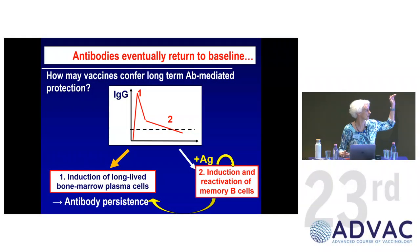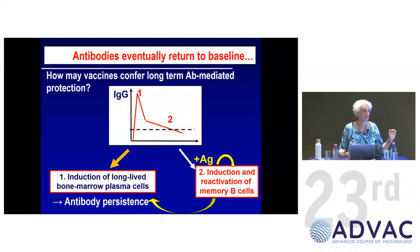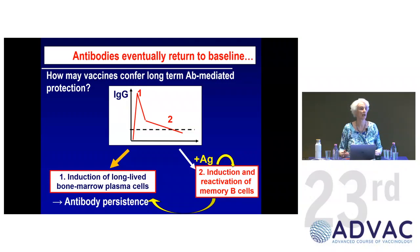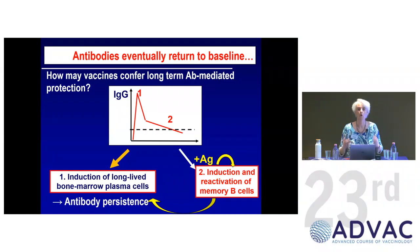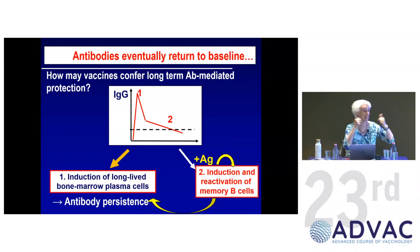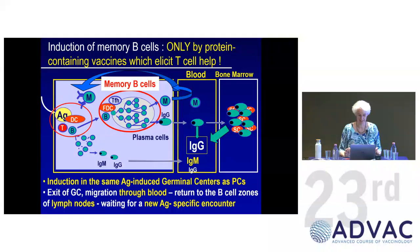At some point antibodies are going to go down below the baseline needed for protection. There are exceptions — hepatitis A, HPV, yellow fever and other live vaccines — but these are the exceptions rather than the rule. At some point you need to induce new B cells to make new antibody-producing cells, and once antibody persistence is outlasted there is only one way to do that: you have to induce and reactivate memory B cells.